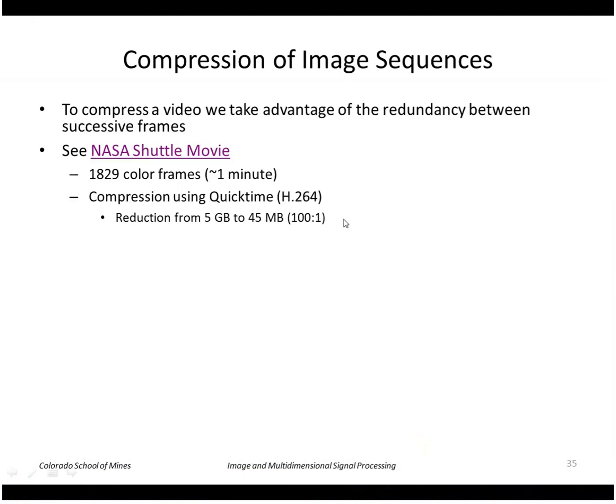So this particular movie has 1829 color frames. It's about a minute long. Original size uncompressed is 5 gigabytes. But using the methods that will show here we get it down to 45 megabytes. So about 100 to 1.